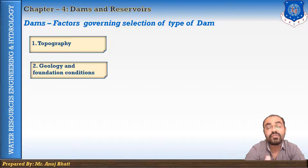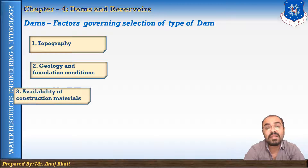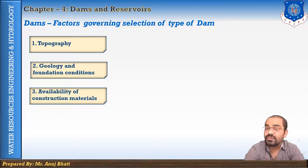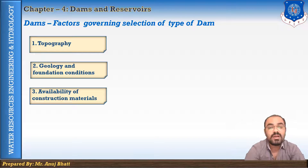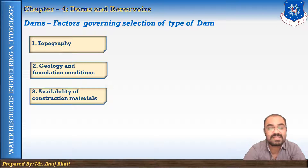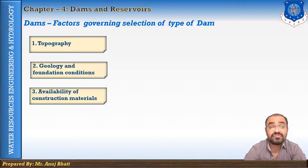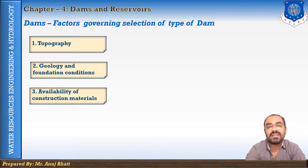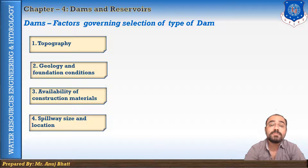The third factor is the availability of construction material, which also affects the type of dam selected. The cost of construction of a particular type of dam depends on the availability of material in the nearby area, reducing transportation charges. If sand, gravel, and coarse stone are easily available nearby, a concrete gravity dam can be constructed. If coarse and fine-grained soils are available, we can choose an earthen dam.